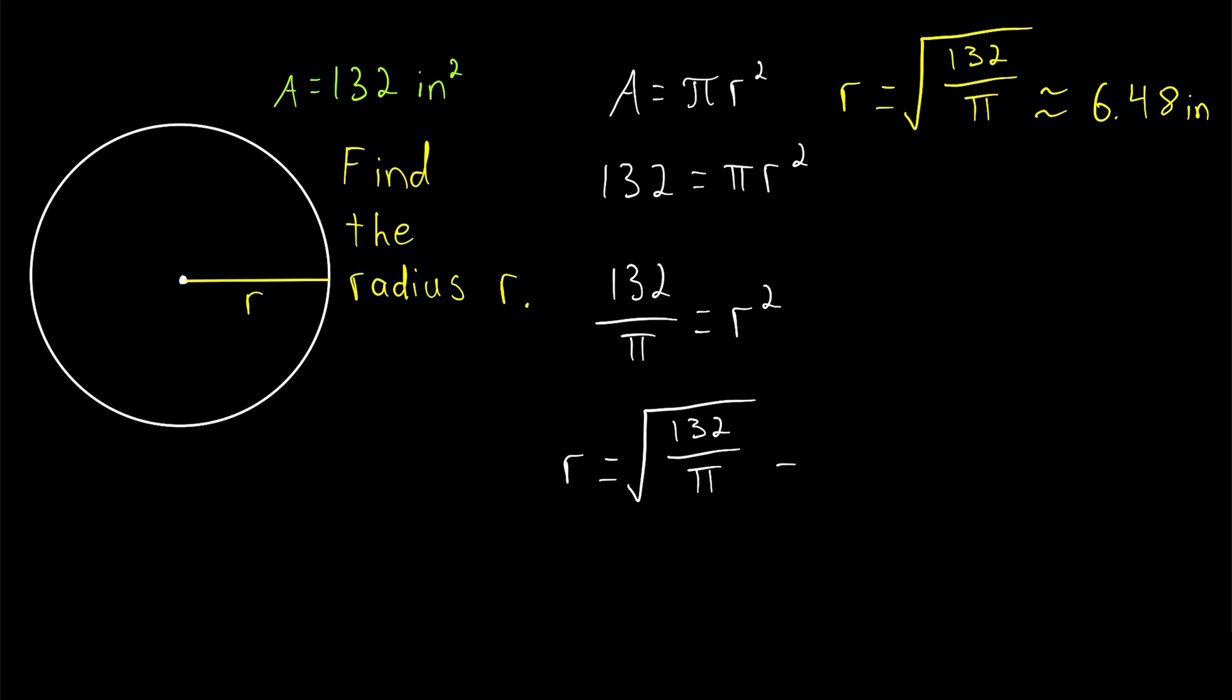So, for example, in this case, 132, we can rewrite as 4 times 33. So, this is equal to the square root of 4 times 33 over π. The reason we did that is 4 is a perfect square, so we can take its square root out of the radical. The square root of 4 is 2, so we can take the 2 out and we're left with 33 over π inside.